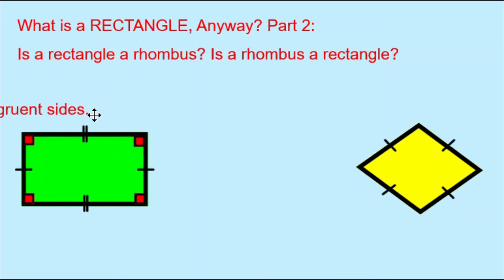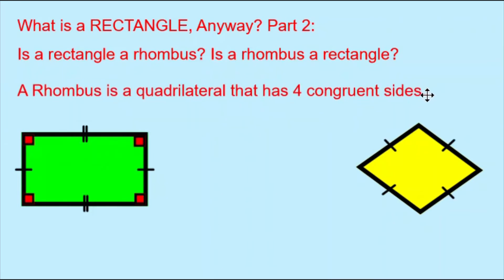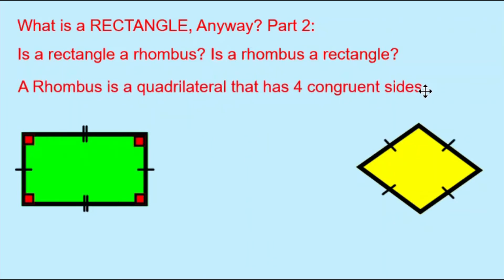Let's look at the definitions for both shapes. A rhombus is a quadrilateral that has four congruent sides. Yes, our yellow rhombus is following this rule, but our green rectangle is not. But can it? Is it possible for a rectangle to have four congruent sides? The answer is yes, because a square has four congruent sides and a square is also a rectangle. This rectangle is not also a rhombus, but it is possible for a rectangle to also be a rhombus.